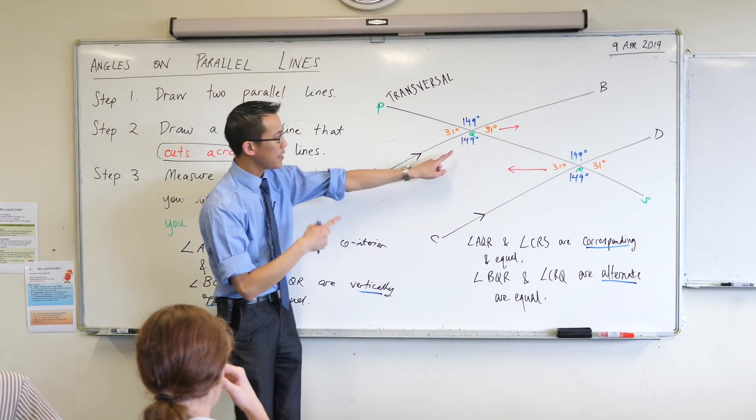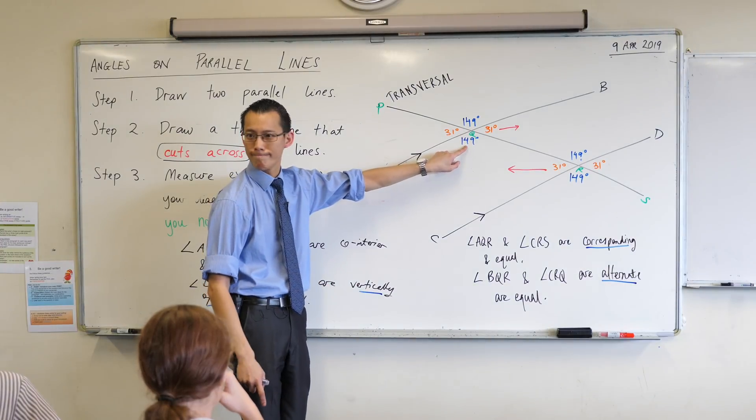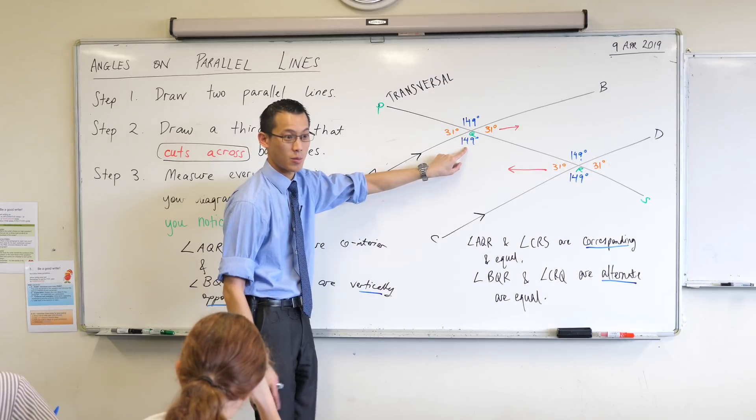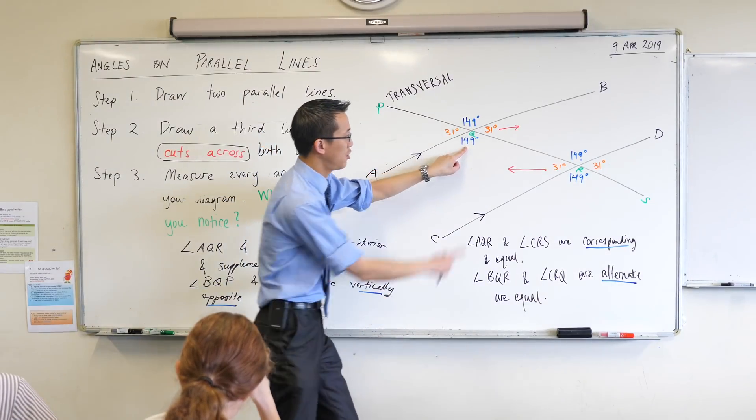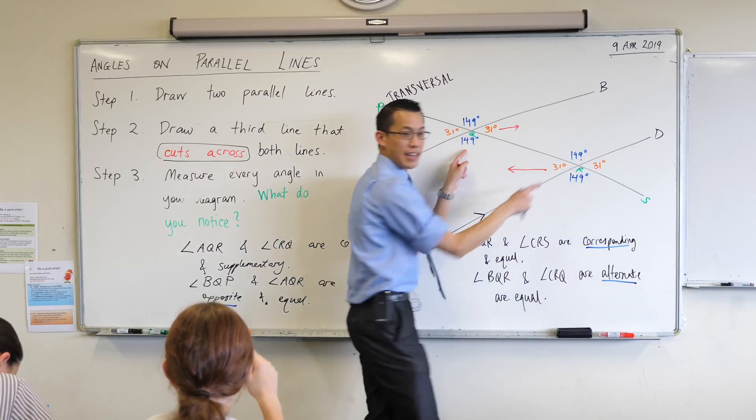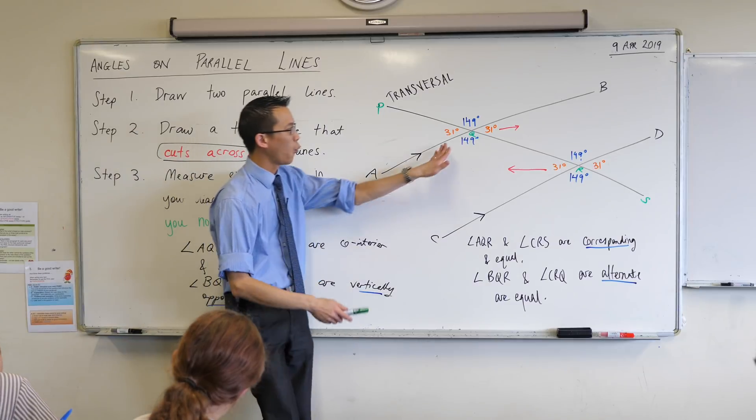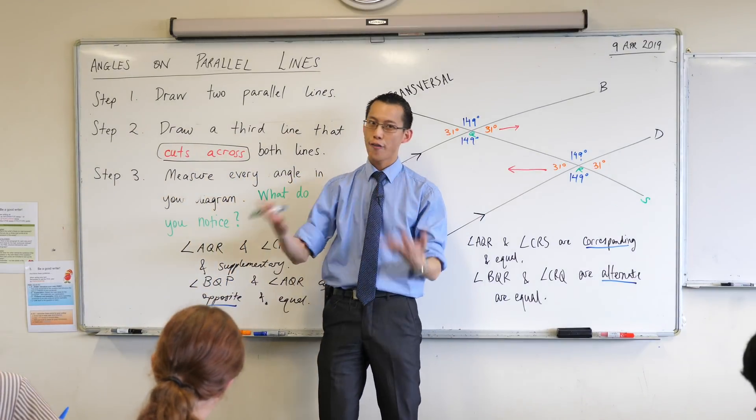Can someone tell me what would be alternate to this angle here? What's the name of the angle that's alternate to this one? Yeah, go ahead. QRD. Now, that's exactly right. One of the ways you can see that is, again, think about where are the angles facing, right? If you drew like a little man here, which way is this angle facing? It's kind of going down, isn't it? Do you agree with that? Yeah.